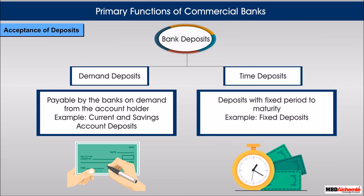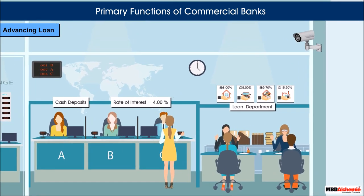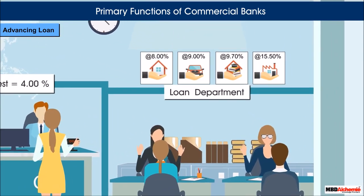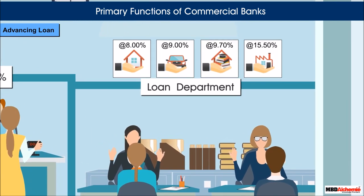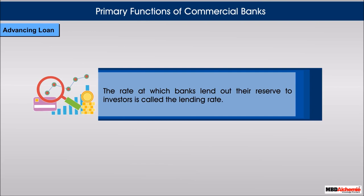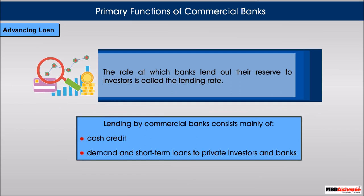After keeping a certain portion of the deposits as reserves, the bank gives the balance to borrowers in the form of loans and advances. The rate at which banks lend out their reserves to investors is called the lending rate. Lending by commercial banks consists mainly of cash credit, demand, and short-term loans to private investors and banks.